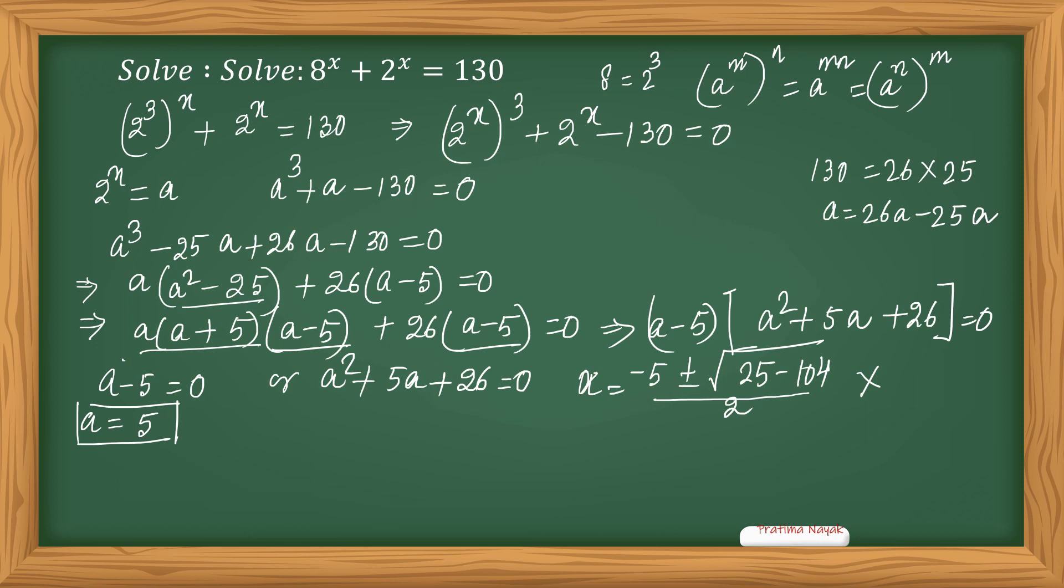Now what is a? a is nothing but 2 raised to the power x. So I'll write 2 raised to the power x equals 5. Then x equals log base 2 of 5. So x equals log 5 base 2.